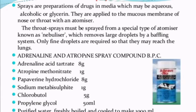An example formula is Adrenalin and Atropine Spray Compound BPC (British Pharmacopoeia). It contains: adrenaline acid tartrate 8 g, atropine methonitrate 1 g, papaverine hydrochloride 8 g, sodium metabisulfite 1 g, chlorobutol 5 g, propylene glycol 50 ml, and purified water (freshly boiled and cooled) to make 1000 ml.